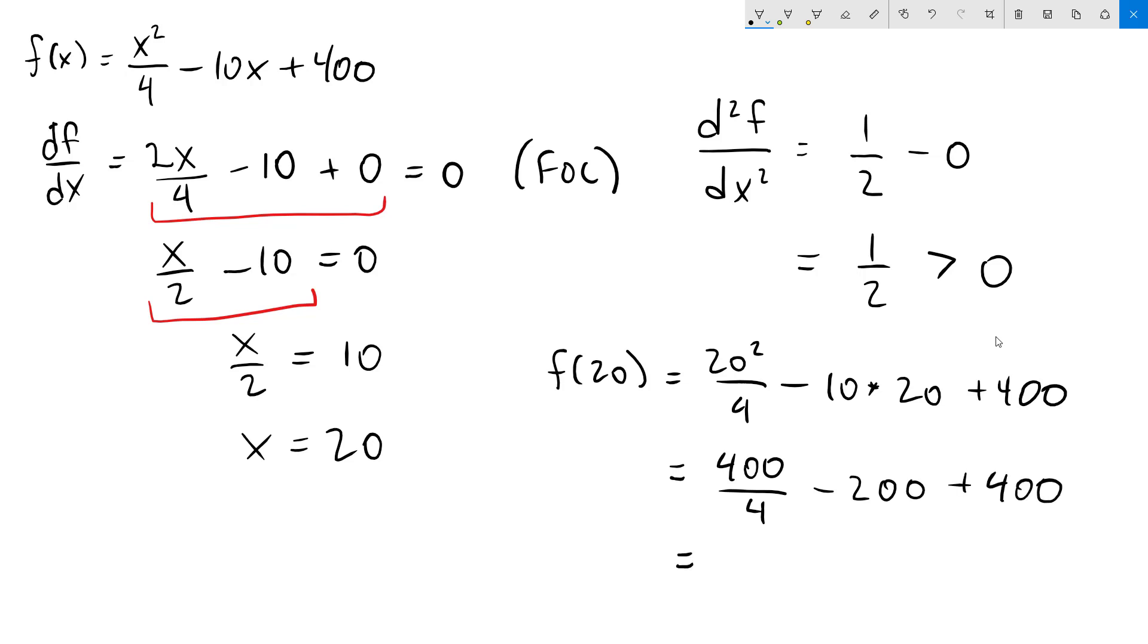400 over 4 is just 100. So adding up those three numbers, we get 300.